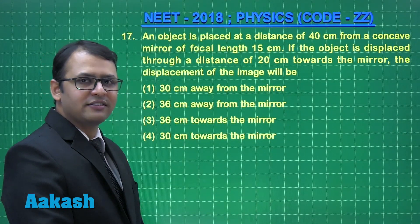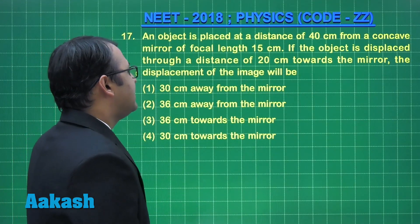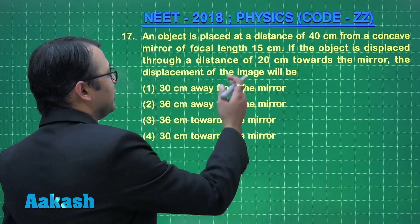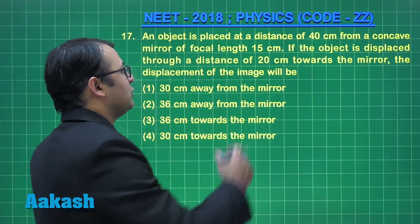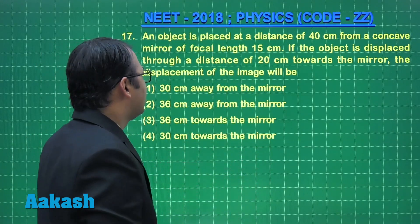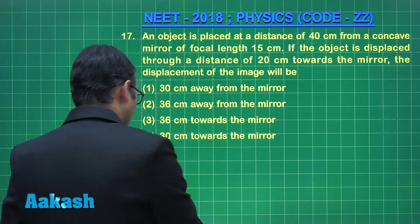Let us start with question number 17. The question says that there is an object which is placed at a distance of 40 cm from a concave mirror of focal length 15 cm. If the object is displaced through a distance of 20 cm towards the mirror, the displacement of image will be. Let us see the solution.